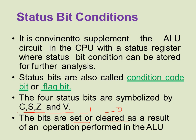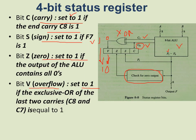The bits are either set to 1 or cleared to 0. For the overflow bit V: if the output is 0 then overflow will be 0; if the value is 1 then overflow will be 1.